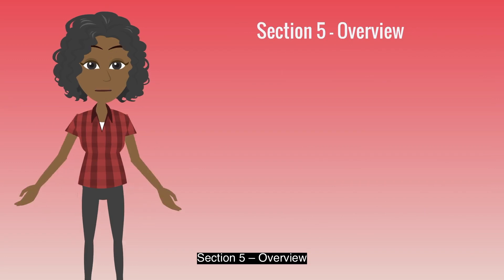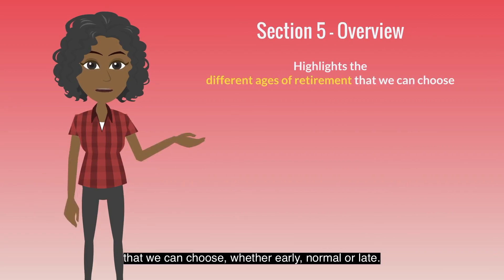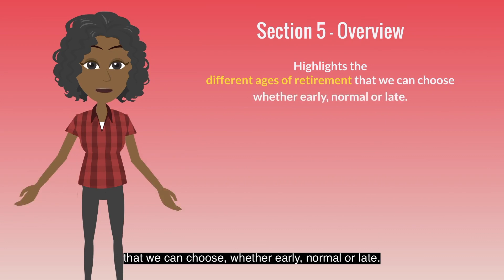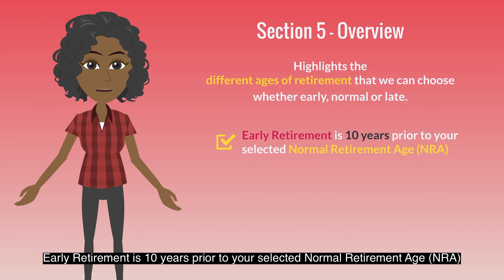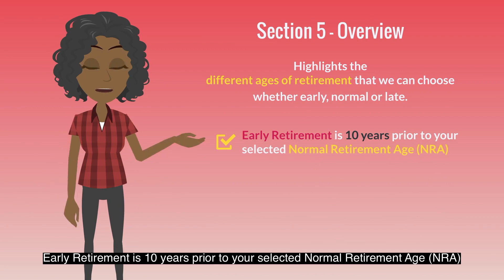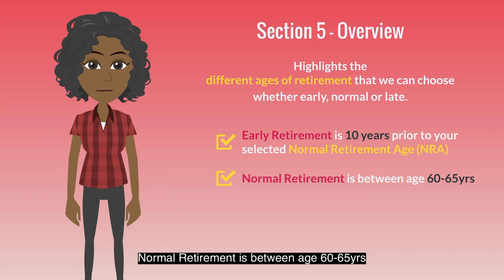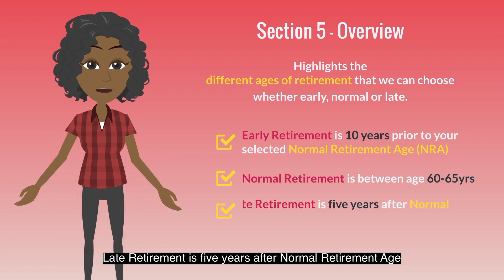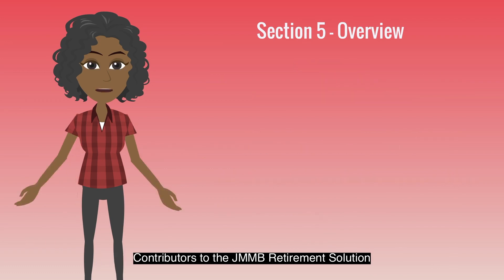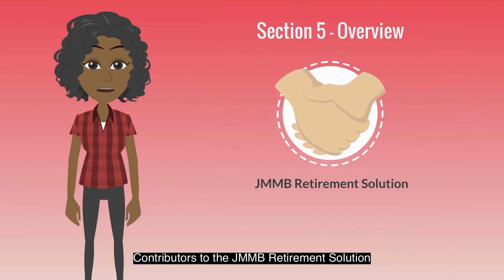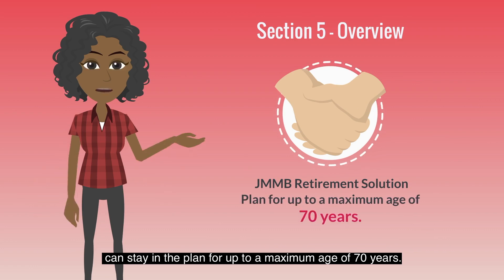Section 5 overview highlights the different ages of retirement that you can choose, whether early, normal, or late. Early retirement is 10 years prior to your selected normal retirement age, or NRA. Normal retirement is between age 60 to 65 years. Late retirement is 5 years after normal retirement age. Contributors to the JMMB retirement solution can stay in the plan for up to a maximum age of 70 years.